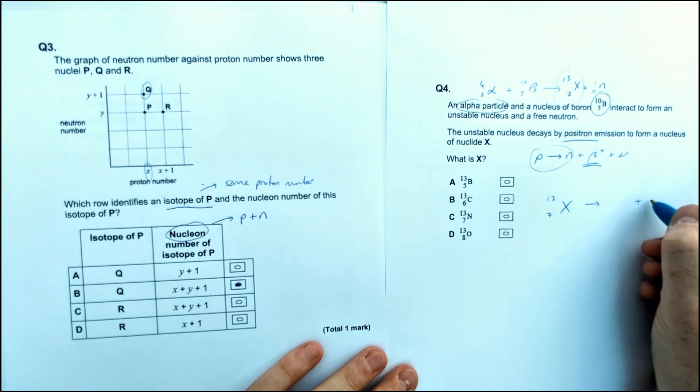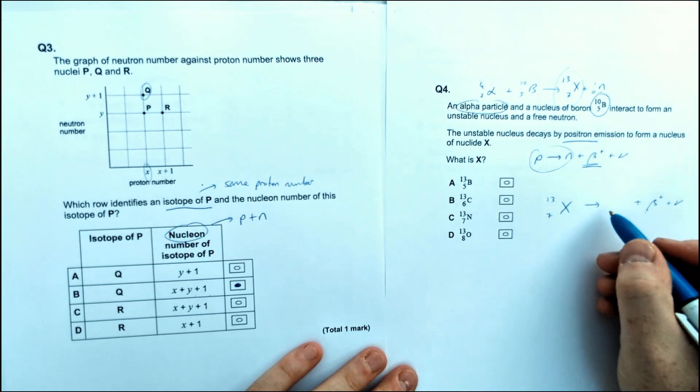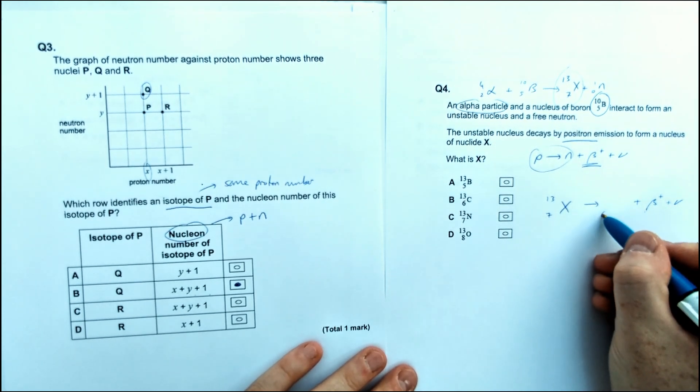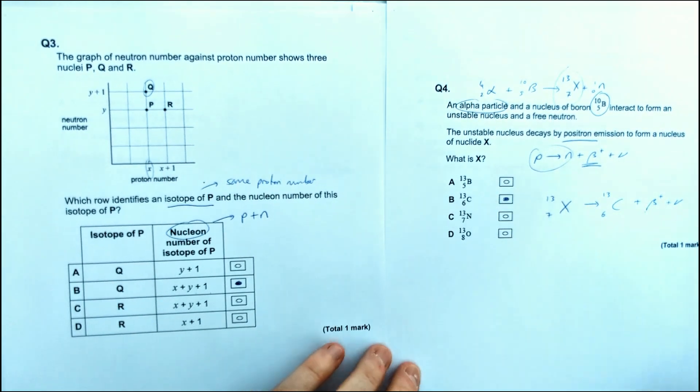Then as a proton becomes a neutron, so if we do the proper notation for that, so we have a beta plus particle plus our neutrino. A proton becomes a neutron, this then becomes 6. This doesn't change, and it happens to be option B, which is our carbon.